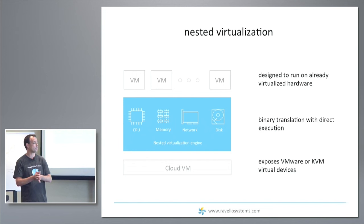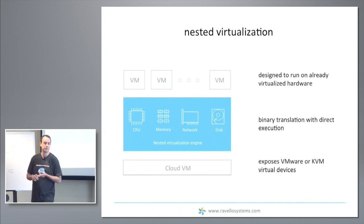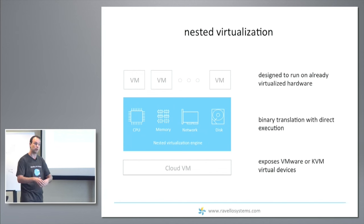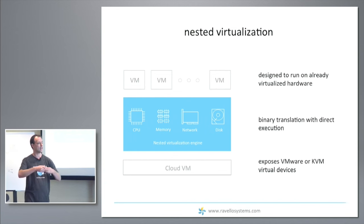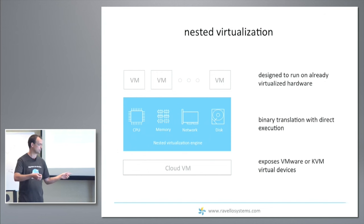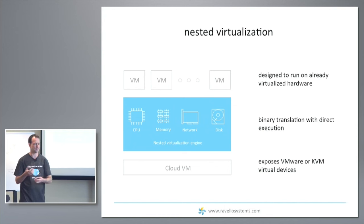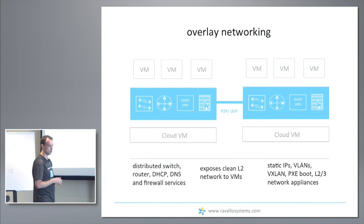Another key thing we've addressed: what we described solves CPU and memory, but a virtual machine also requires network interface cards and storage devices. Different hypervisors expose different NIC types and disk types. We expose what looks like a native VMware environment in terms of hardware devices — you can use VMXNet3 or PVSCSI from the VMware world, VirtIO from KVM, and of course all the usual emulated devices such as E1000, LSI SAS, etc. That's the core part which solves compute.